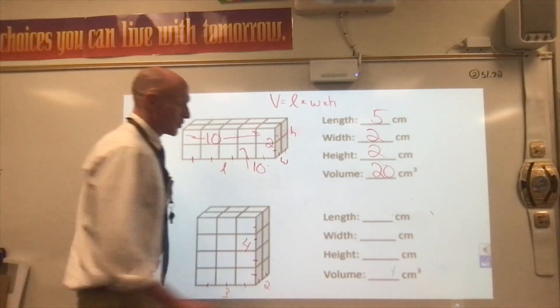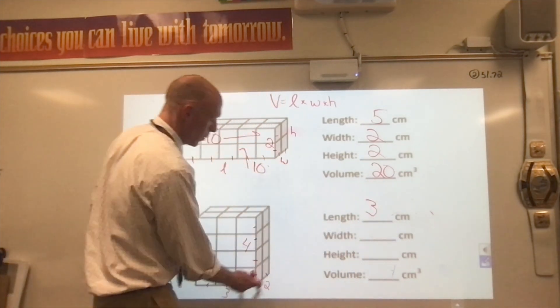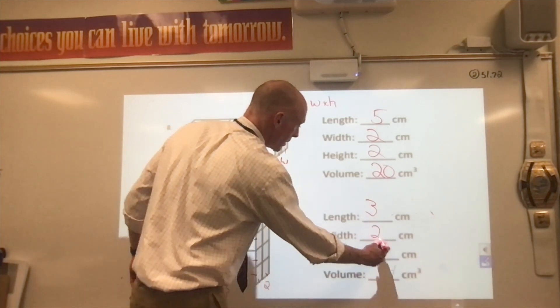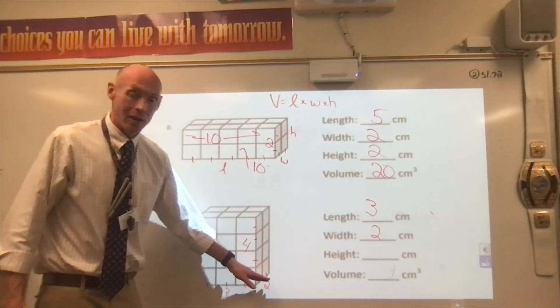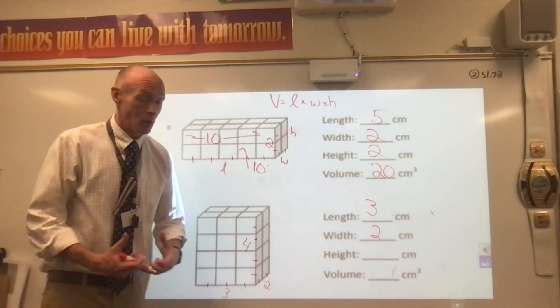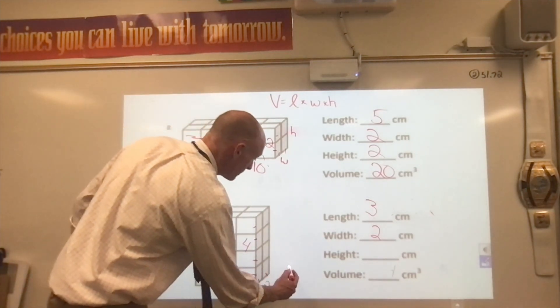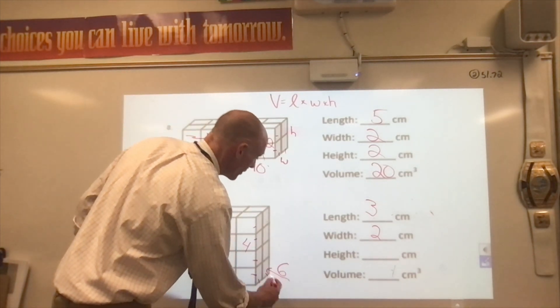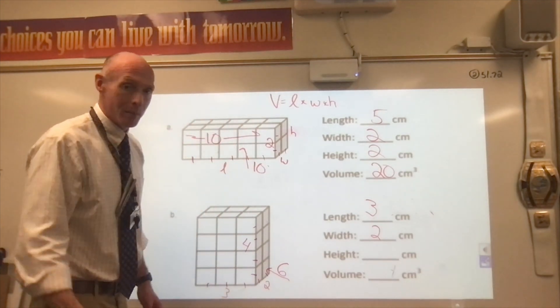So our length is three. Our width is two. So therefore, we know how many are on the bottom layer. Three times two, or six. Awesome. We know there's six cubes on that bottom layer.